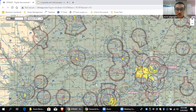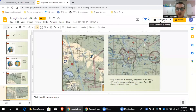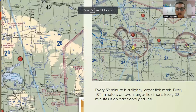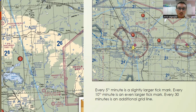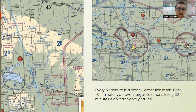A lot of times on the test, it's going to look like you only get two reference points — you see 101 and 48, and that's it. They'll ask what the longitude and latitude is, or where is 47 degrees 30 minutes latitude. They'll have you pick one of these airports, or pick an airport and ask for its longitude and latitude. You've got to be able to find it from just one latitude and one longitude line.